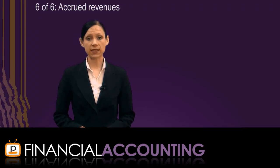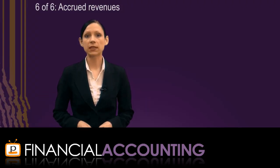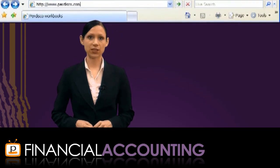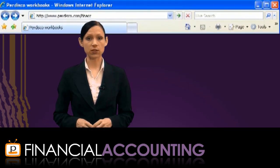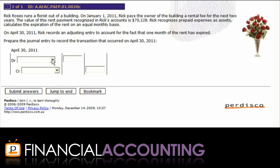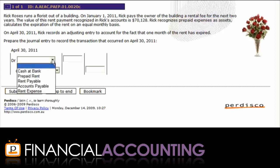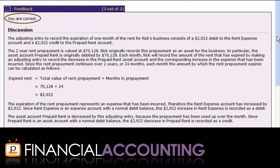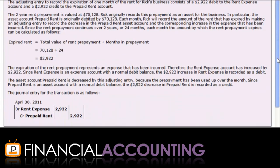We have just gone through one example of each type of adjusting entry, but there are many different possible examples. Your Pedisco eWorkbook can help you master adjusting entries by allowing unlimited practice. In this example, a florist pays $70,128 rent in advance for the next two years. This prepaid expense was originally recognised as an asset. After one month, the adjusting entry to record that one month's rent has expired is recorded by selecting a debit to rent expense for $2,922 and a credit to prepaid rent for the same amount. We can submit that and get personalised feedback and an explanation for the question.